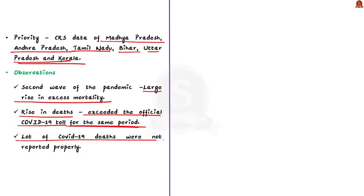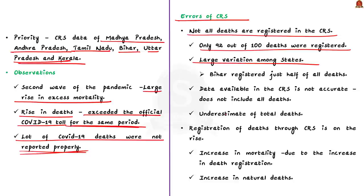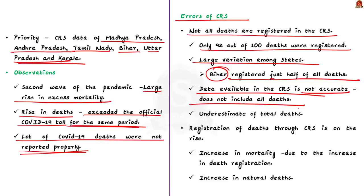This shows that many COVID-19 deaths were not reported properly. The initiative of using CRS data to capture under-reported deaths is significant because it will bring transparency and enforce accountability. However, the author stresses that CRS data has errors. Not all deaths are registered — in 2019, only 92 out of 100 deaths were registered. There was also large variation among states; Bihar, for instance, registers just half of all deaths. The data used by journalists is therefore an underestimate of total deaths and does not give a complete picture.